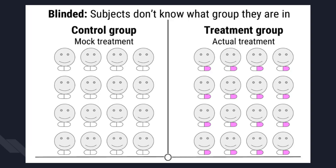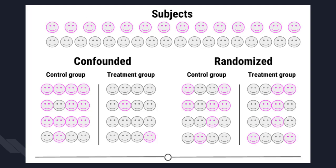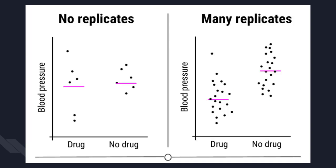Spreading any possible confounding effects equally across groups being compared is a key strategy. For example, if you think age is a possible confounding effect, making sure both groups have similar ages and age ranges will help mitigate any effect it may be having on your dependent variable. This balancing of confounders is often achieved by randomization — generally we don't know what will be a confounder beforehand, so randomly assigning individuals to each group helps ensure potential confounding variables are distributed between groups roughly equally, helping eliminate or reduce systematic errors.